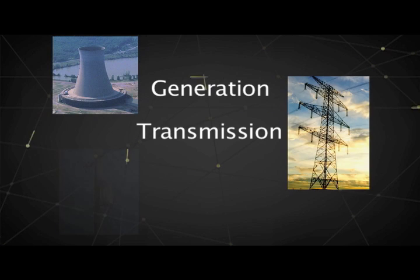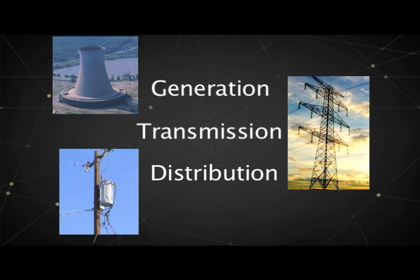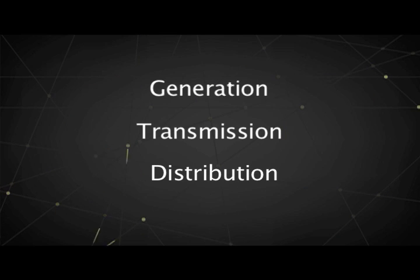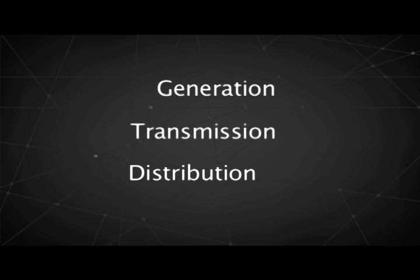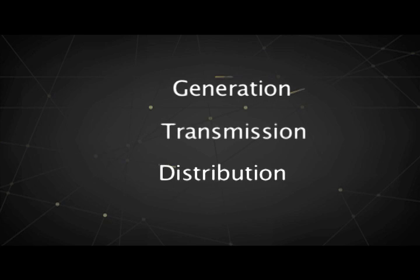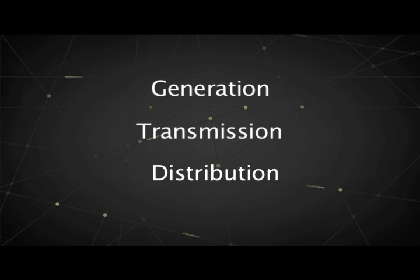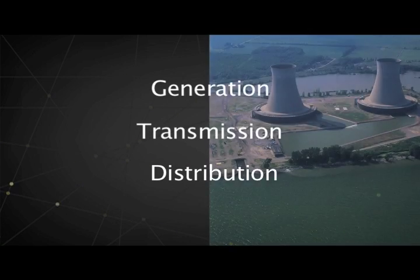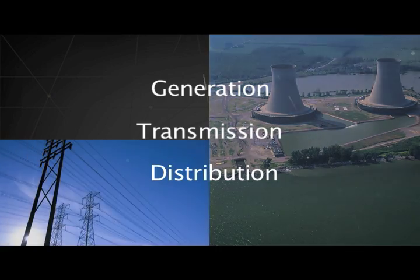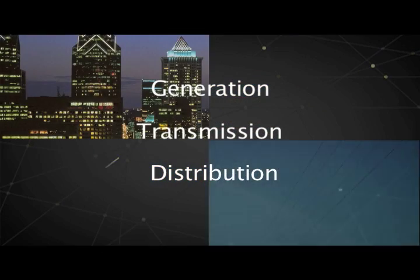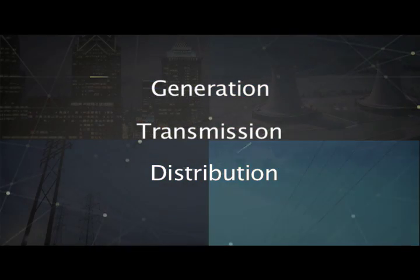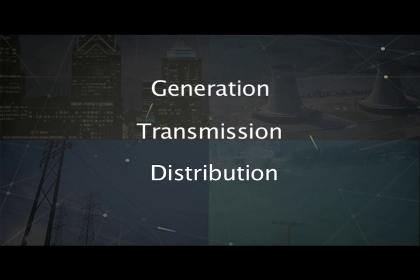The electricity grid consists of three parts: generation, transmission, and distribution. In order for the grid to function effectively, these three elements need to be in balance at all times. The grid is monitored 24-7, so the organizations that operate the grid can react immediately to deal with situations like a sudden increase in electricity use that could threaten reliable service.